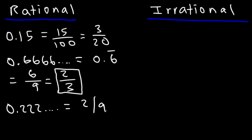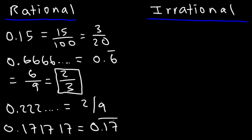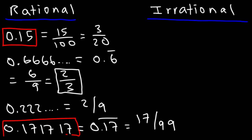Now what about 0.17 repeating — is that a rational number? In this case, we can write it as a ratio of two integers: 0.17 repeating is 17 over 99. So whether you have a finite decimal number or one that goes on forever but repeats, they're all rational numbers.